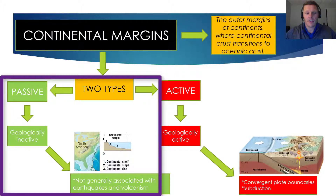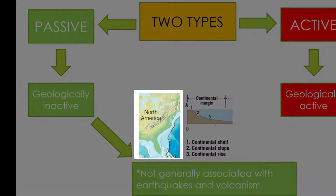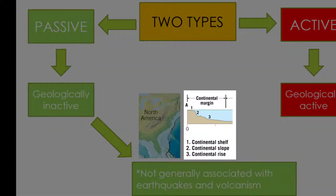Passive continental margins are geologically inactive, meaning they're generally not associated with earthquakes and volcanism. A great example is the east coast of the United States — a passive continental margin extends from Florida all the way up the New England coastline. Passive continental margins have three primary features: the continental shelf, the continental slope, and the continental rise, which I'll cover in more detail later.